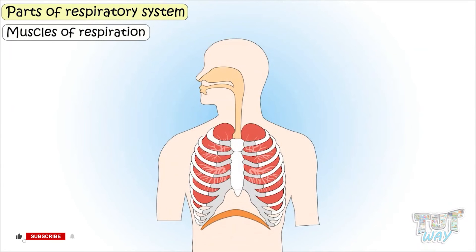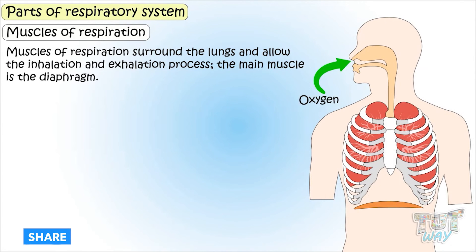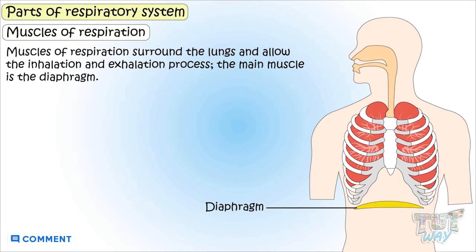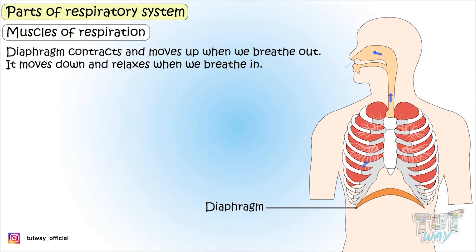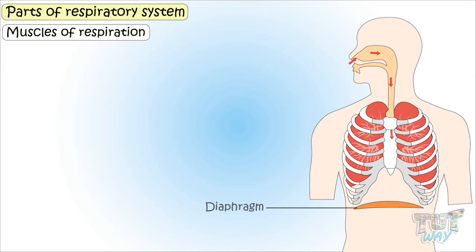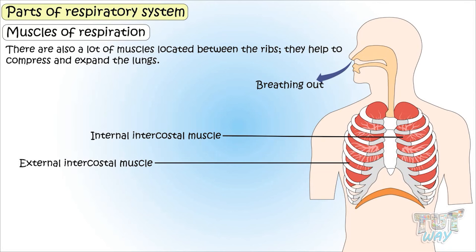Next are the muscles of respiration. These muscles allow inhalation and exhalation, and the main muscle is the diaphragm — a thin sheet of muscle at the bottom of the thorax. The diaphragm contracts and moves up when we breathe out, and moves down, becoming almost straight, when we breathe in. There are also muscles located between the ribs that help compress and expand the lungs while breathing.